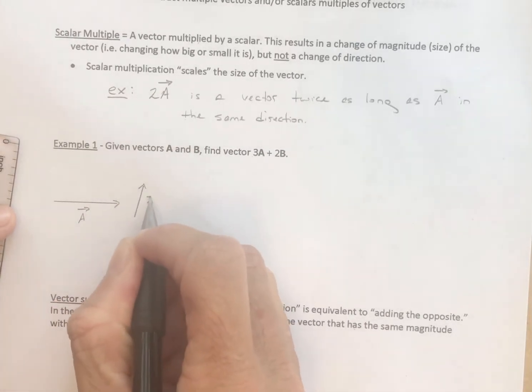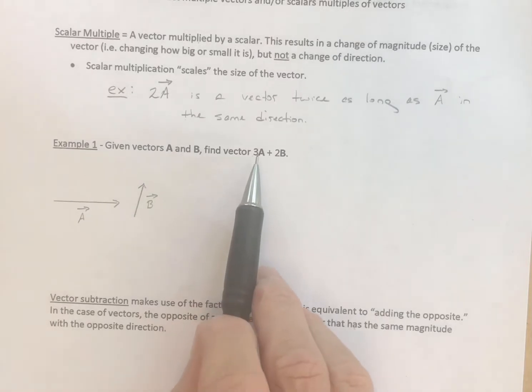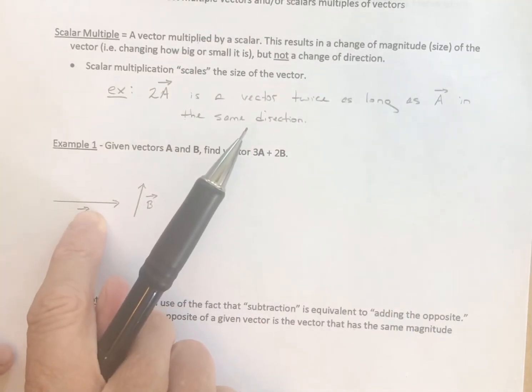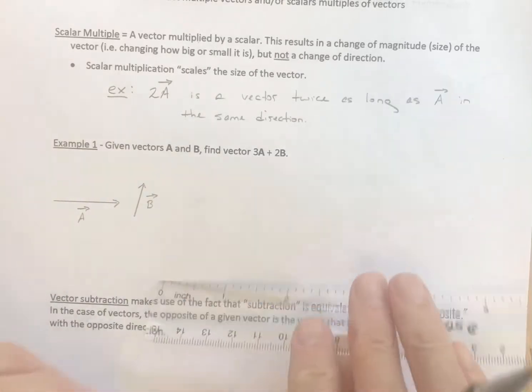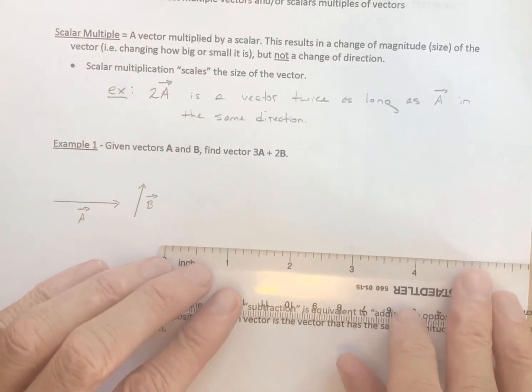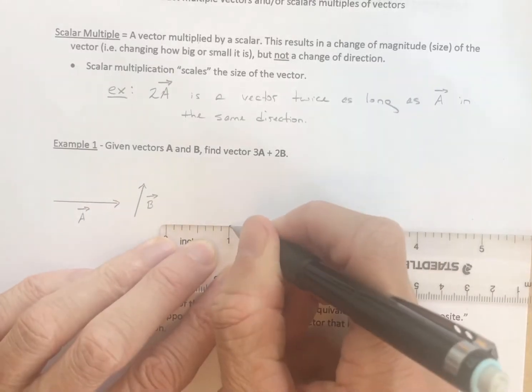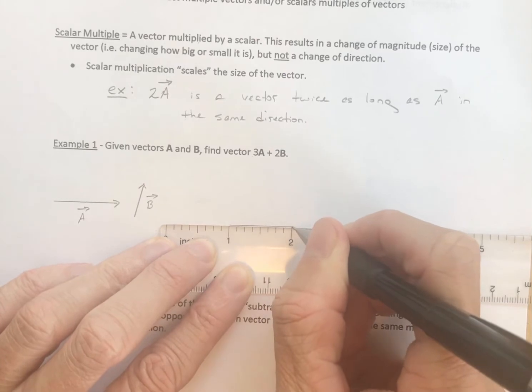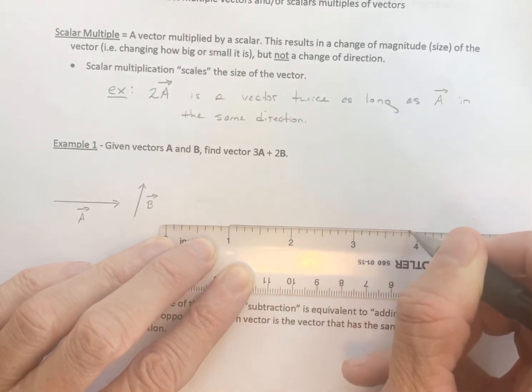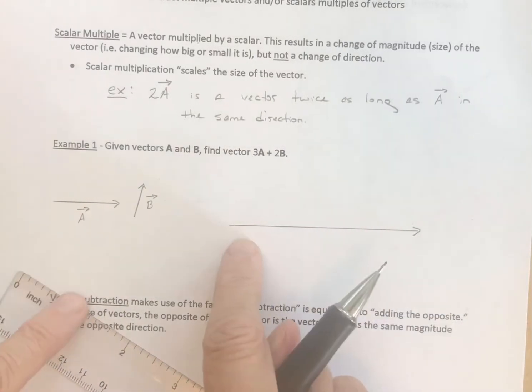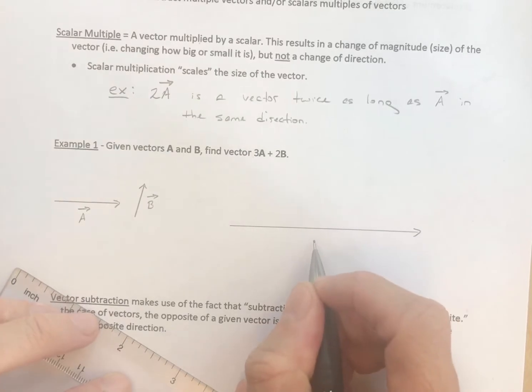I'll make vector a one inch to the right. And I've done this in previous video lectures, nothing fancy here. And I'll make vector b a half inch up and to the right. So we want to find the vector 3a plus 2b. So we need to find 3a. I need a vector that is 3 times as long as this vector in the same direction. Well a is 1 inch. So 1, 2, 3. Same direction. 3 times as large. So this is vector 3a.